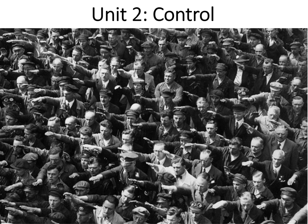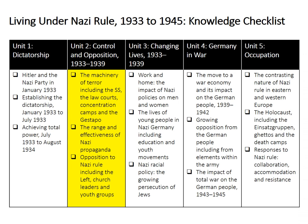Hi, in this video we're going to consolidate everything we've just learned about Nazi control before the war in unit 2. You should have by now watched videos 2.1, 2.2 and 2.3. This is the part of the course that looks at control and opposition from 1933 to 1939 and is the second of the five units for the OCRB course.